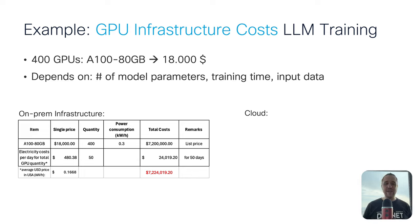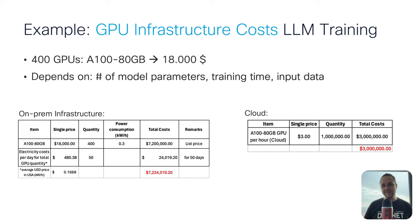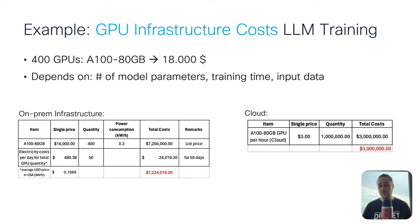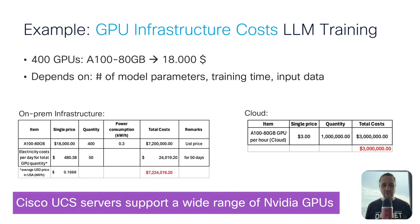Don't underestimate the electricity costs — that's around $24,000 US dollars if you train for 50 days. On the other hand, we have the cloud option. The single price of a single A100 GPU is $3 per hour. In a cluster it can be around $5-6 per hour, so it takes around $3 to $5 million total. Training most probably won't happen on on-prem infrastructure because of the cost. However, AI inferencing of the large language model can definitely run on on-prem infrastructure since we don't need A100 GPUs — you can go with the L40 or other mid-sized NVIDIA GPUs, which is totally fine for on-premise inferencing.